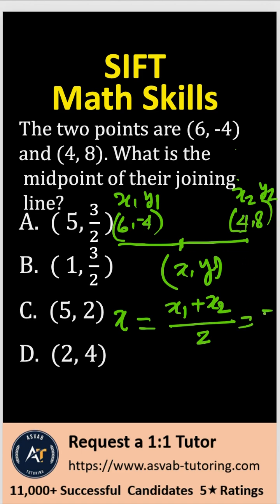10 divided by 2 is 5, and then Y component will be Y1 plus Y2 over 2. So that gives you 8 minus 4 is 4, 4 divided by 2 equal to 2.